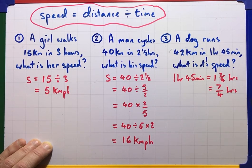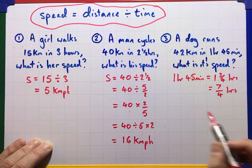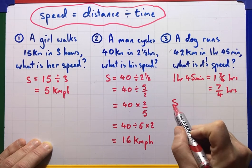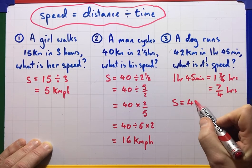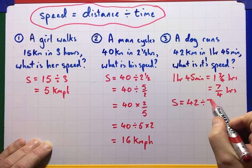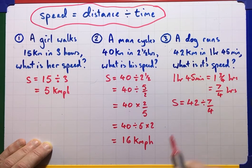So, our speed is going to be 42 divided by 7 over 4. Distance divided by time.